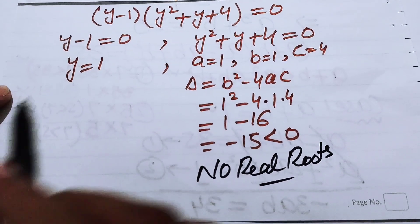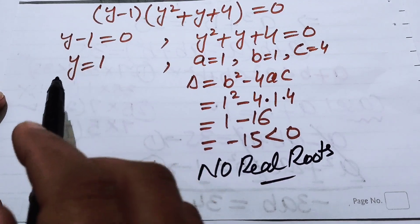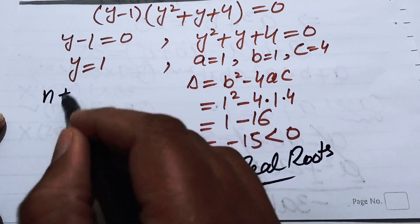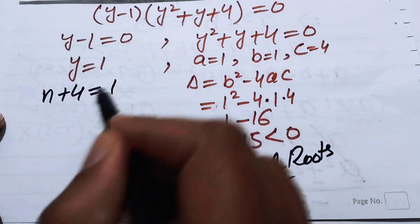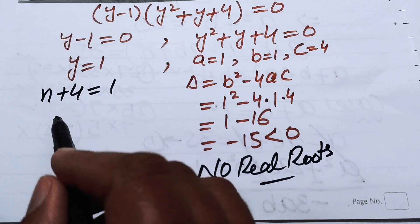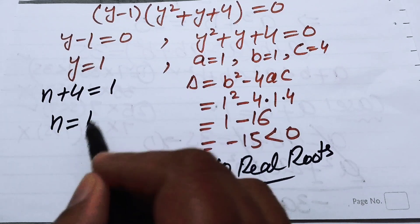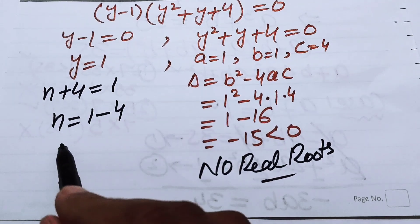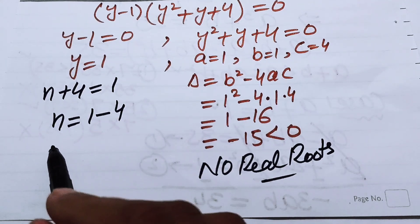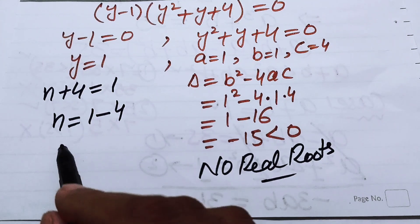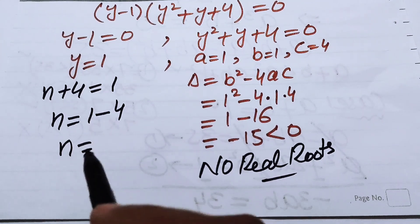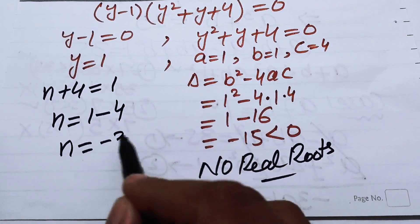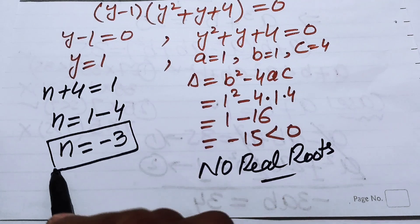From Case 1, y = 1. Back-substituting y = n+4, we get n+4 = 1, so n = 1−4 = −3. Therefore, the final answer is n = −3.